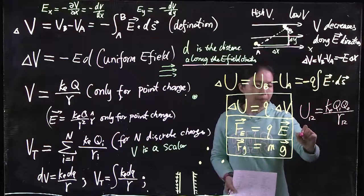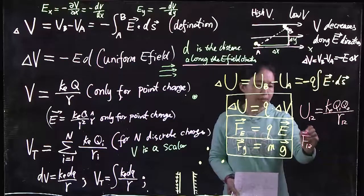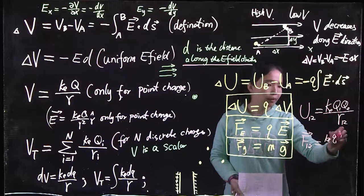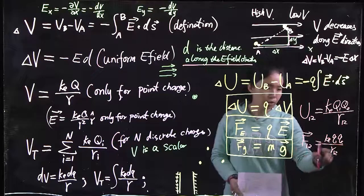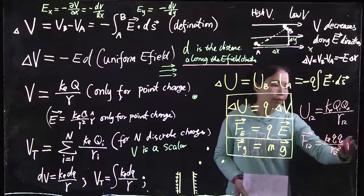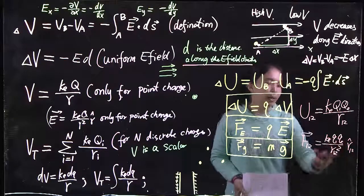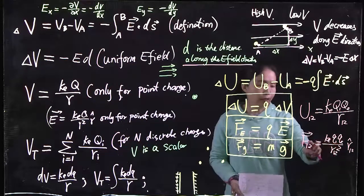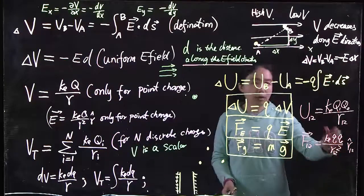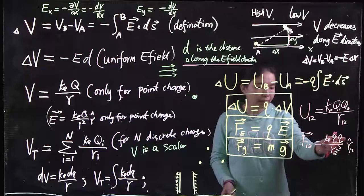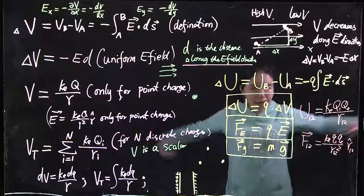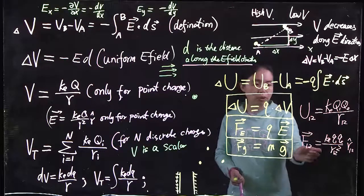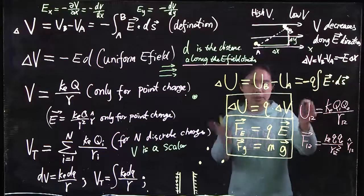For one pair of charges, the force that charge one applies to charge two equals K_E times Q1 times Q2 over R12 squared, in the direction from one to two. If the two charges have the same sign, the product is positive and the force is pushing away. If Q1 and Q2 have opposite signs, the product is negative and the force is attractive, going against the R direction. So for one pair, you can talk about the force between the two charges and the energy associated with them.